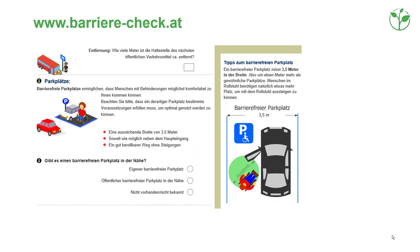Screenshot of www.bar-e-check.at shows how the online check works in detail. The online check was designed as a survey with check boxes. In this example, the survey requires information about barrier-free parking lots.